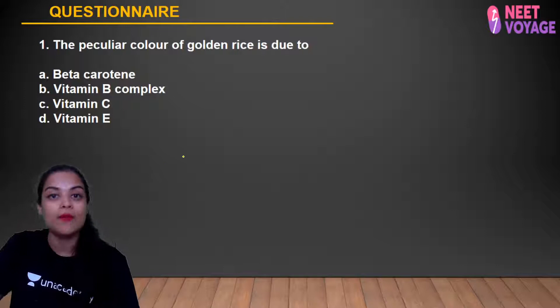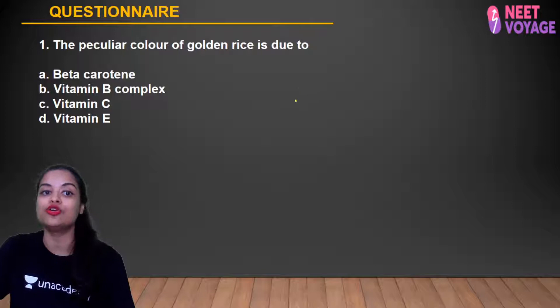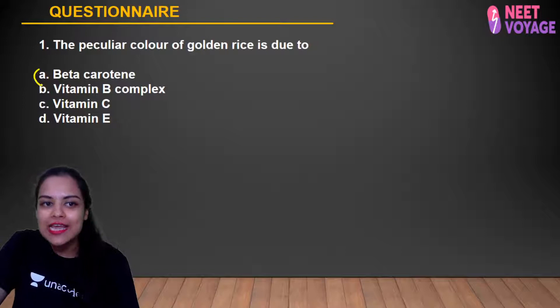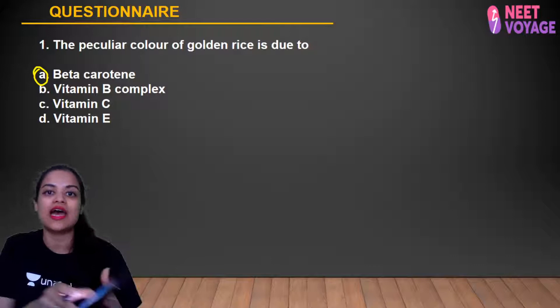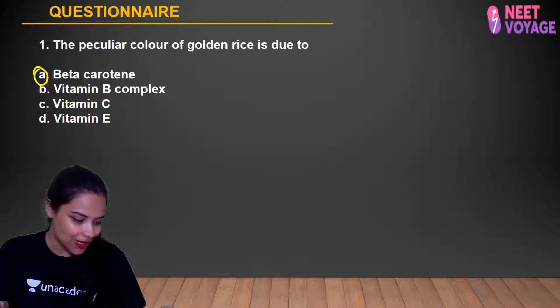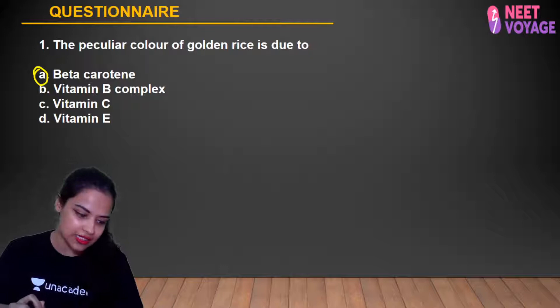Question 1 is from Biotechnology Part 2: The peculiar golden color of golden rice is due to the accumulation of beta-carotene in its endosperm. Beta-carotene helps in Vitamin A absorption, giving it this golden/yellowish color. Shashank, Tanusha, and Anshika gave the correct answer — it is option A.